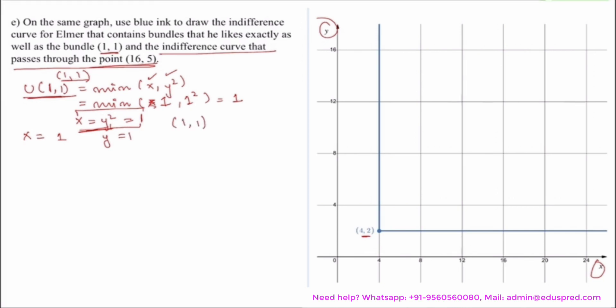So simply what I have to do here is just plot (1,1) and draw parallel lines to the previous graph intersecting at the point (1,1). And you would be easily able to get your desired indifference curve.